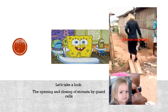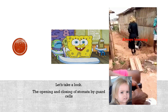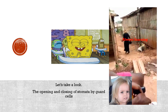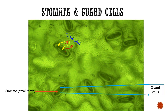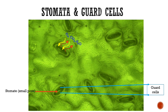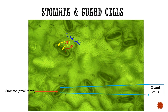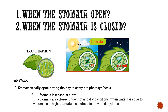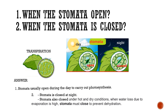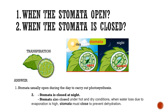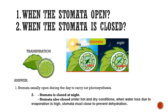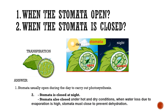Let's take a look at the opening and closing of stomata by guard cells. Stomata usually open during the day to carry out photosynthesis. Stomata close at night, and also close under hot and dry conditions when water loss due to evaporation is high — stomata must close to prevent dehydration.